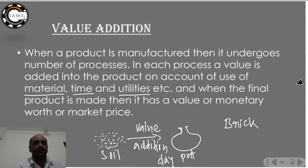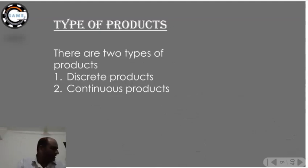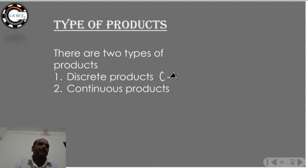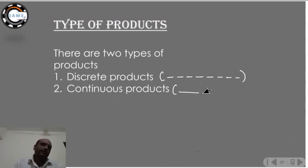Now we will see the types of products in the market. There are two types: discrete products and continuous products. Discrete products are produced one at a time — for example, if you are a car manufacturer, each car is a discrete product. It is not continuous production; manufacturing happens one car at a time.